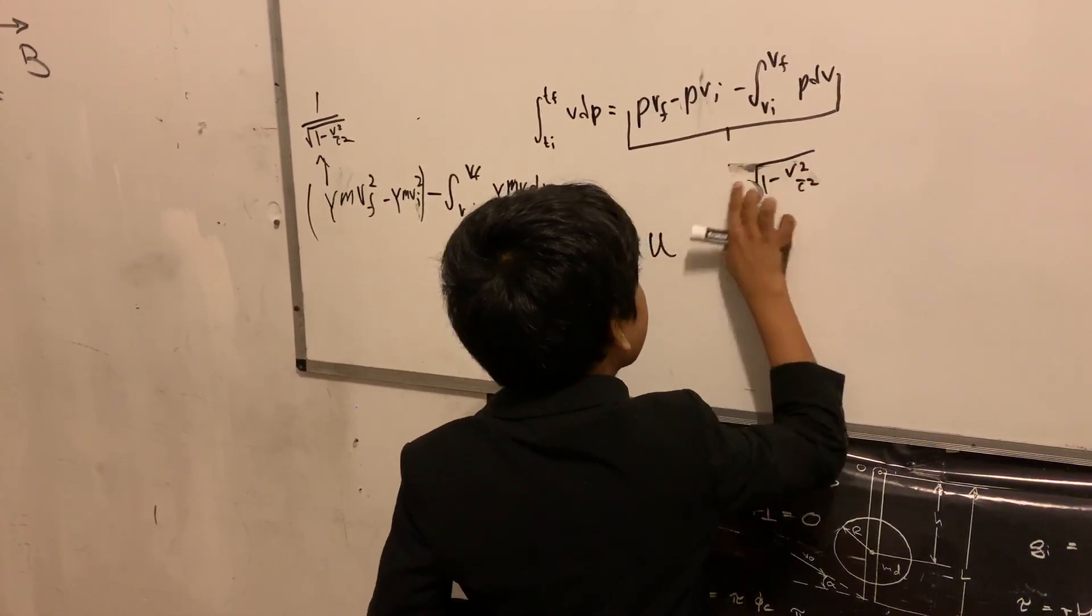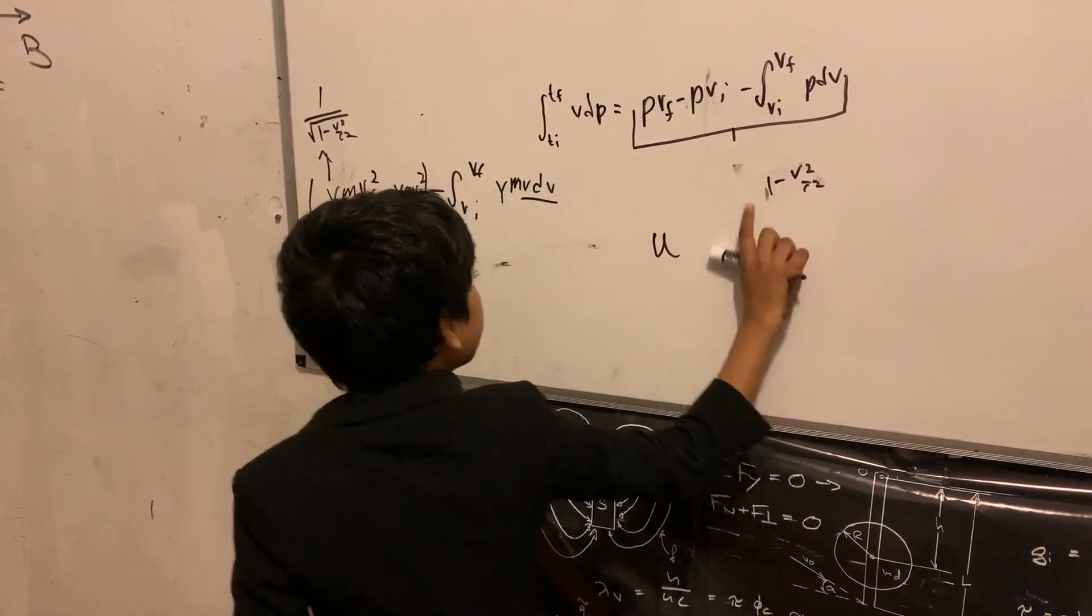for 1 minus V squared over C squared. That's going to be what U is.